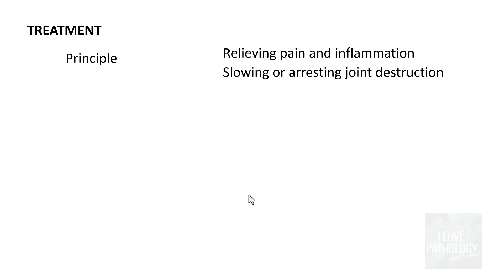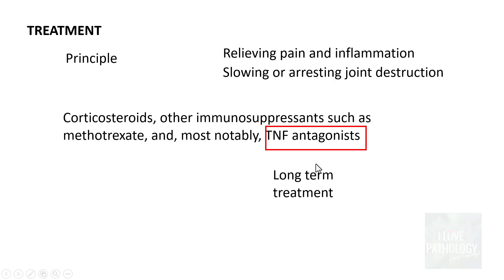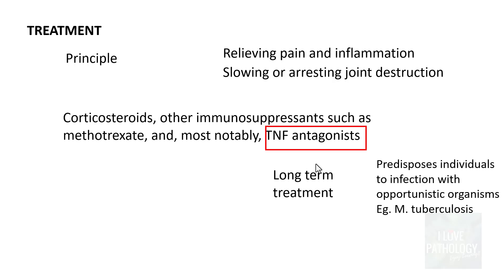How do you treat these patients? There is no permanent cure for rheumatoid arthritis. The principle of treatment is to relieve pain and inflammation and to slow or arrest the destruction of joints. This is brought about by administering corticosteroids or immunosuppressants such as methotrexate, and most notably tumor necrosis factor antagonists. Patients treated with TNF antagonists long-term can be predisposed to opportunistic infections, particularly Mycobacterium tuberculosis.